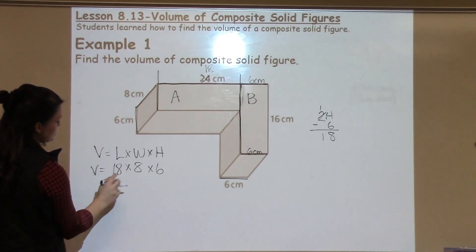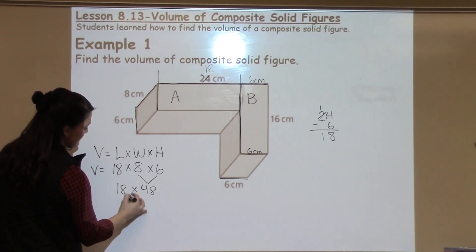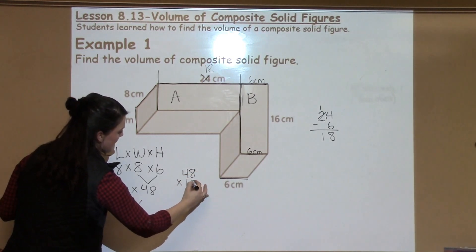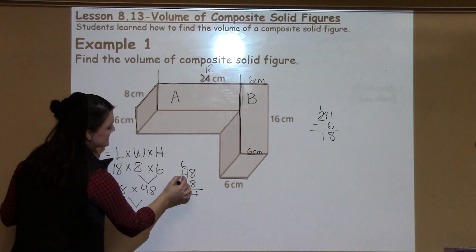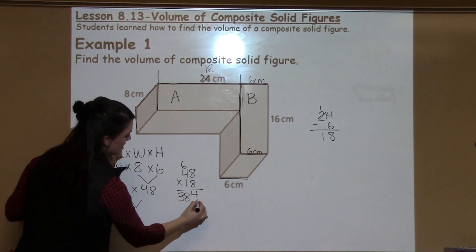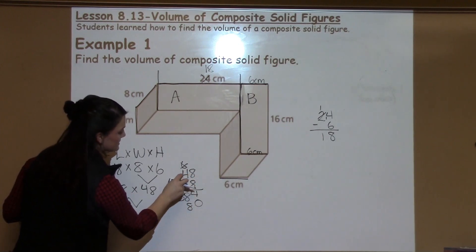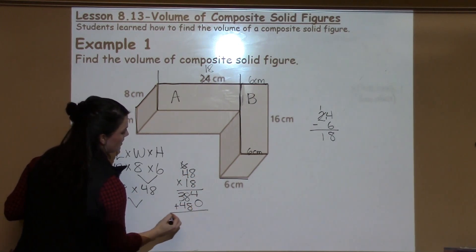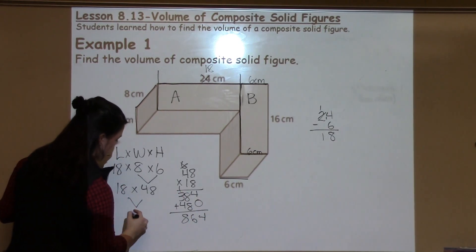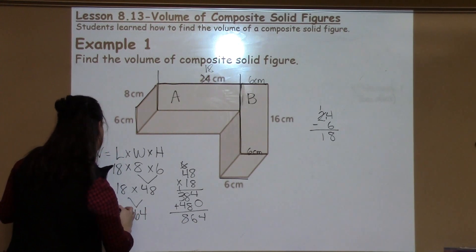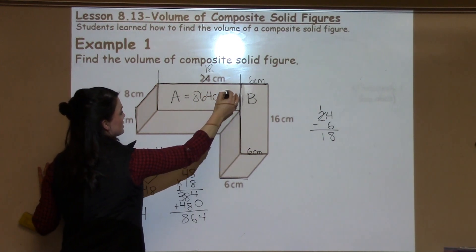Now I'm going to solve my problem. Eight times six is 48. Then I have 18 times 48, which I'll pull off to the side. Eight times eight is 64, carry the six. Eight times four is 32, plus six is 38. Add my zero. One times eight is eight. One times four is four. Then I'm able just to add and carry, like I normally would, to find out that the volume of shape A is 864 centimeters cubed.